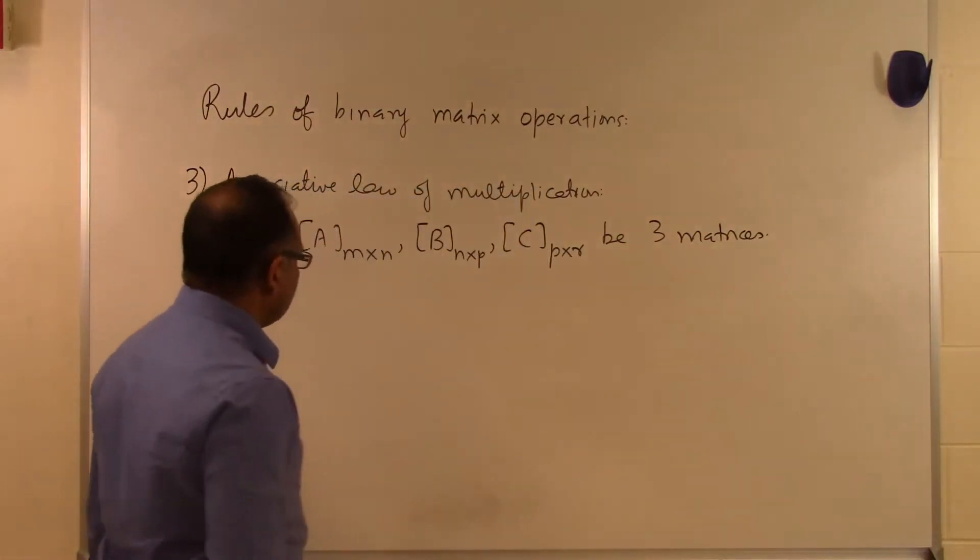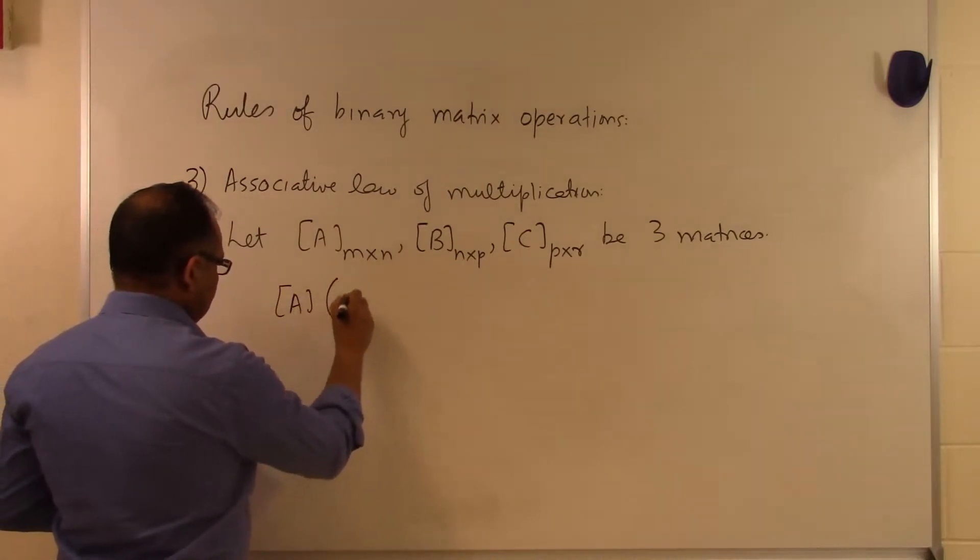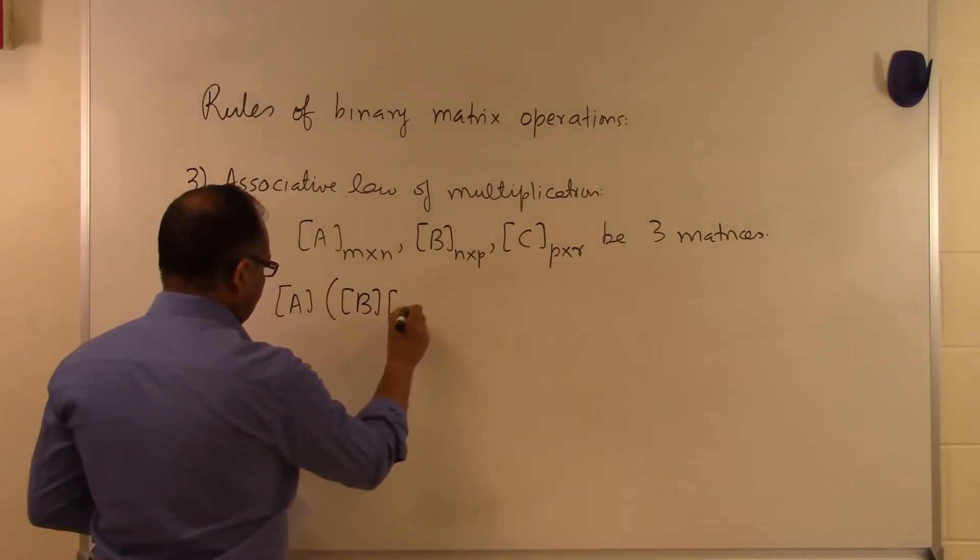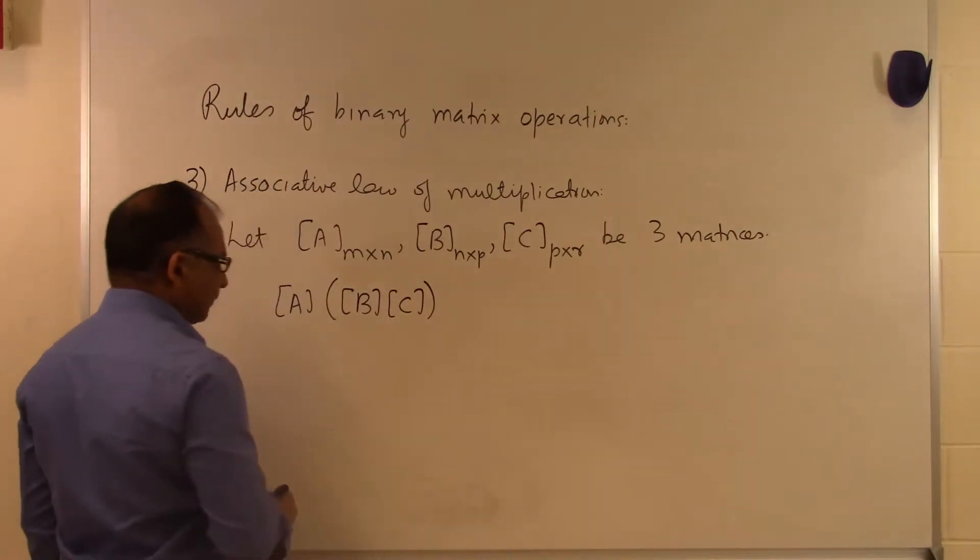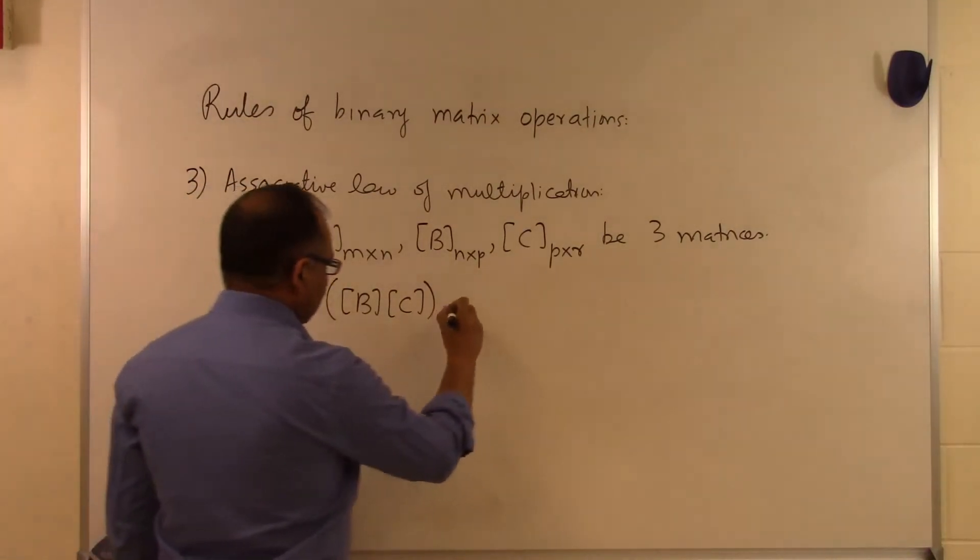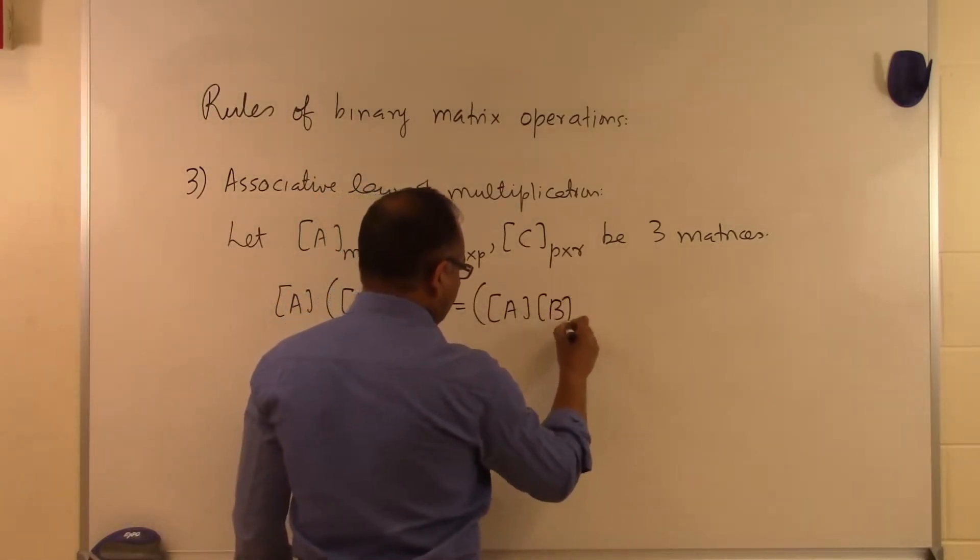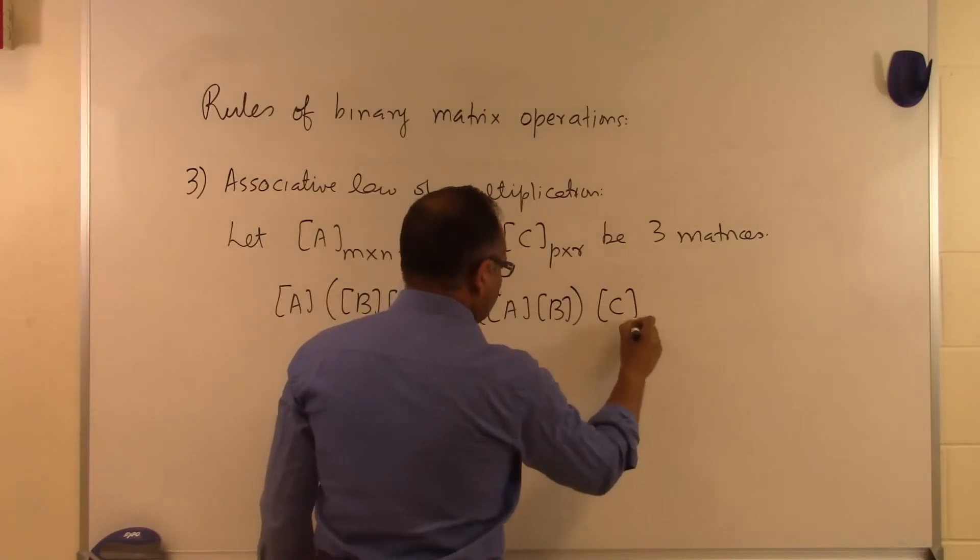Then in that case, what's going to happen is that if I take A times B times C here like this, where B times C is done first then it's multiplied to A, it will be the same as multiplying A by B and then multiplying by C.